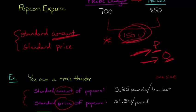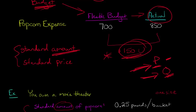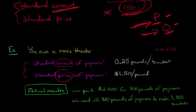Now that we have these standards, we have something to benchmark the actual amounts against. At the end of the month, we found we spent $2,200 to buy 800 pounds of popcorn. We used all 800 pounds — nothing left over — and ultimately we were able to make 3,300 buckets of popcorn. Now we have actual results and standards, and we have something we can compare.